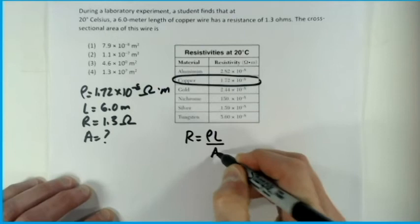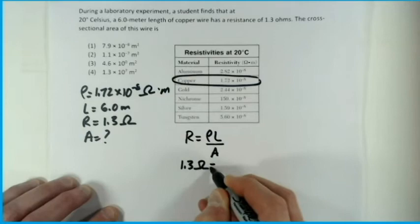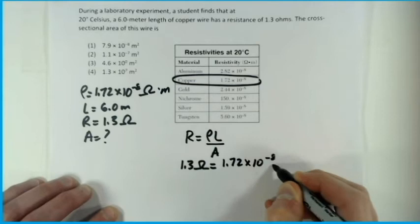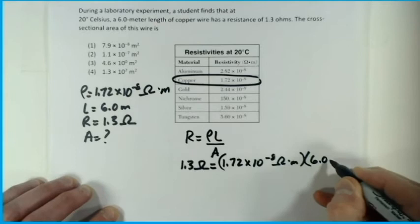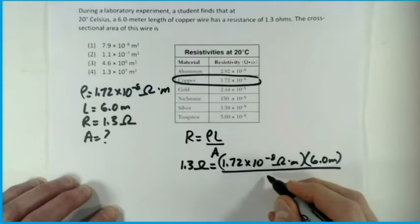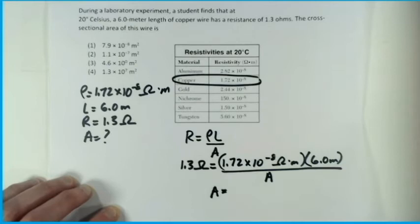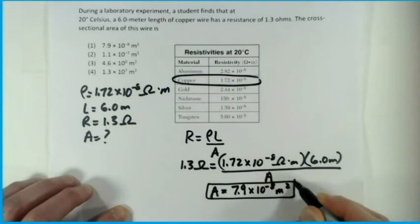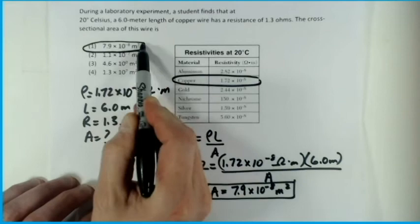Using R = ρL/A, plug in values: 1.3 ohms = (1.72 × 10⁻⁸ ohm·meters) × (6.0 meters) / A. Solve for A — plug and chug into your calculator — and you get A = 7.9 × 10⁻⁸ meters squared. The units on area must be meters squared. Looking at the answer choices, this matches the first one, so the answer is number one.